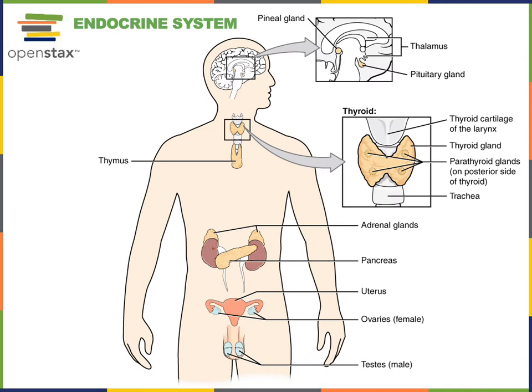In previous videos, we discussed the role of the hypothalamus, pituitary gland, thyroid gland, and parathyroid glands. This video will focus on the adrenal glands, which are a pair of pyramid-shaped organs located superior to the kidneys. The adrenal glands are also known as the suprarenal glands, indicating their location superior — 'supra' — to the kidneys — 'renal,' referring to kidney.